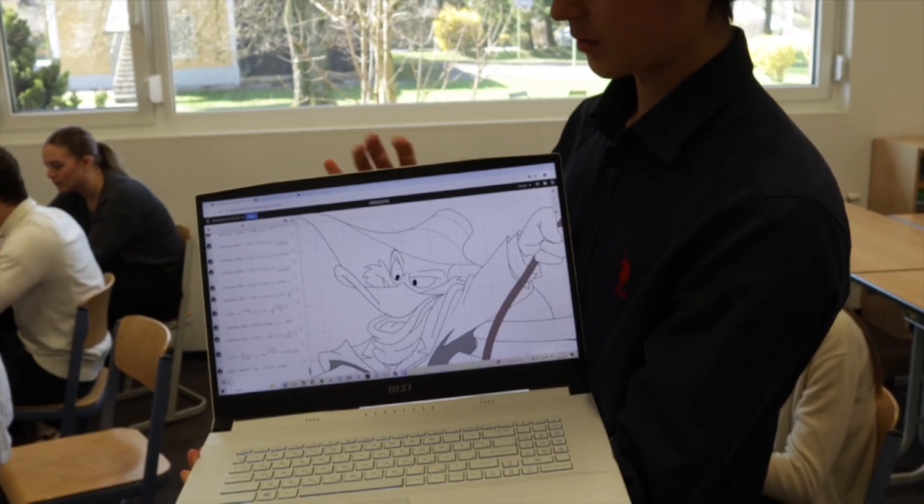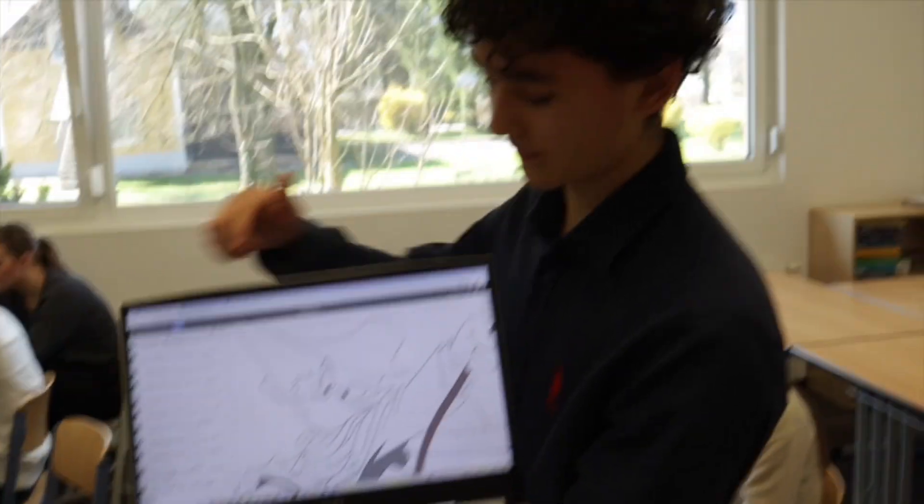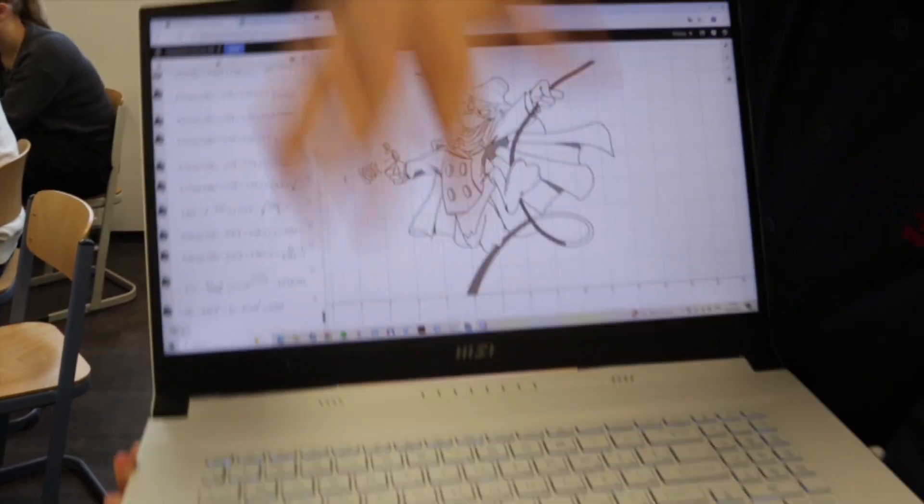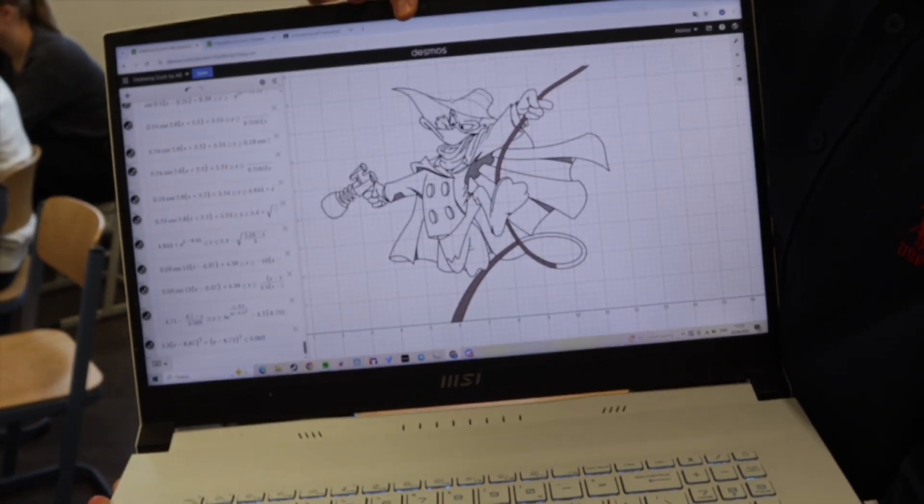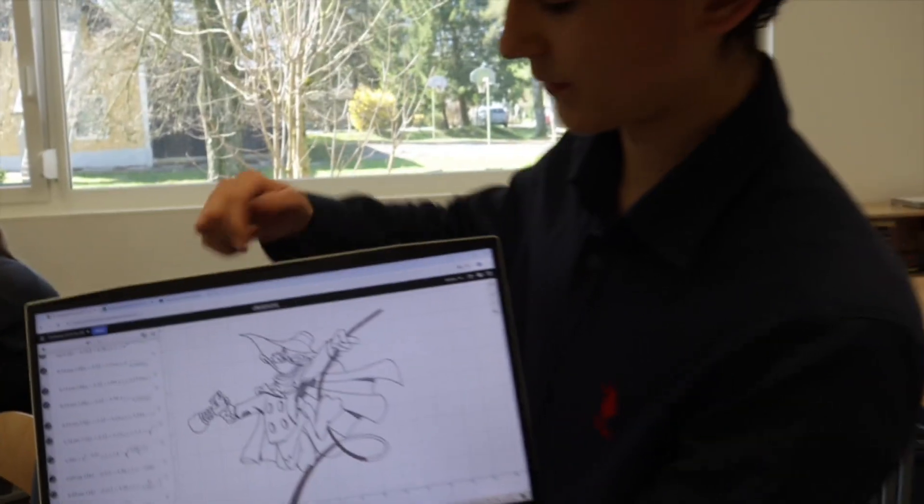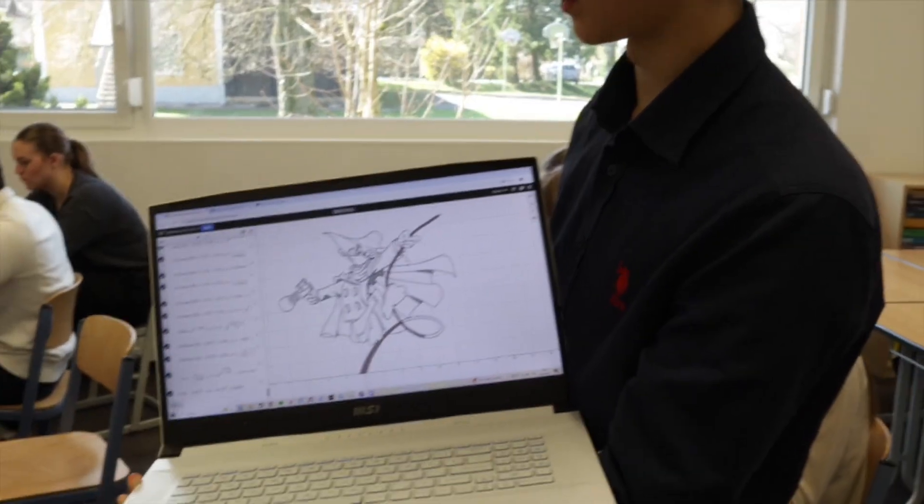So basically it's just Darkwing Duck. I tried to just fill in the shadows right here, right there. So just right here. So it doesn't look that bad because if it's all black and white sometimes with all these layers, it's just going to look super messy.